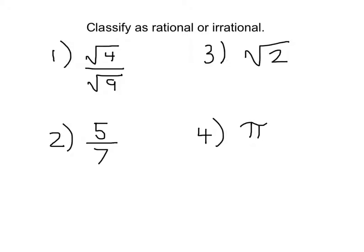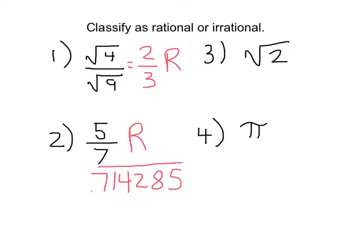Try these — pause your video and then restart to see how you did. Welcome back. Number one: square root of 4 over square root of 9. Square root of 4 is equal to 2, and square root of 9 is equal to 3 — that is a fraction using integers, so this is a rational number. Number two: 5 over 7. This is a fraction and 5 and 7 are both integers, so this is also a rational number, which means that as a decimal it would either terminate or repeat. If I took my calculator and did 5 divided by 7, I would get a number that repeats — though it would be hard to see because calculators only go out a few places. Believe it or not, all six of those digits are going to repeat.